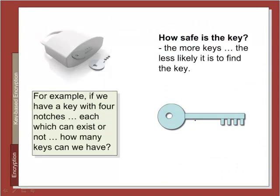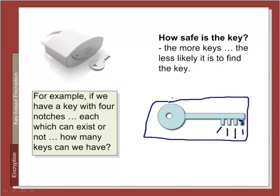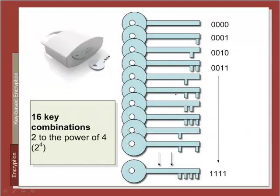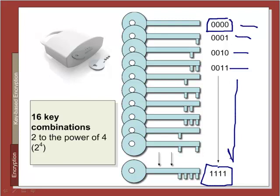How safe is our key — how big and complex should it be? Consider an example with four notches in a key where each notch can either exist or not. The total number of possible keys is 2 to the power of the number of notches — in this case, 16 different keys. In binary, a key with no notches is all zeros and one with all notches is all ones. It wouldn't be too difficult to find the key with only 16 possibilities, so we need to maximize the number of available keys.